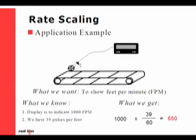Our example means to display feet per minute of a process. Our fastest rated speed is 1000 feet per minute, and 39 pulses per foot are given off from our sensor. Our rate input then becomes 1000 times 39 over 60, or 650. We would then enter in the programming 1000 for a display, and 650 for an input.